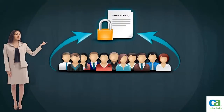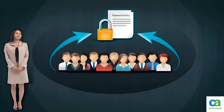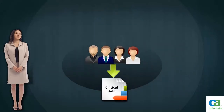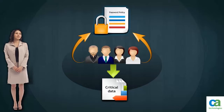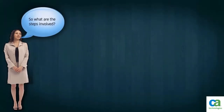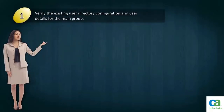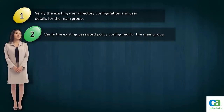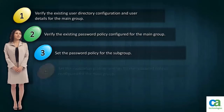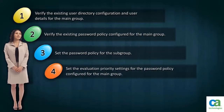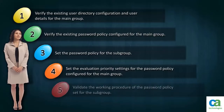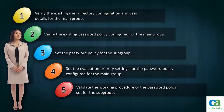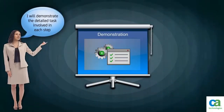Assume we have one password policy set for the entire user directory — the main group. Senior management accesses critical data, so I need to create a separate password policy for that subgroup. The steps involved are: first, verify the existing user directory configuration and user details for the main group; second, verify the existing password policy for the main group; third, set the password policy for the subgroup; fourth, set the evaluation priority settings for the main group policy; and finally, validate the working procedure of the password policy set for the subgroup. I will now demonstrate the detailed tasks involved in each step.